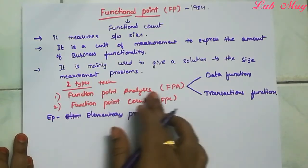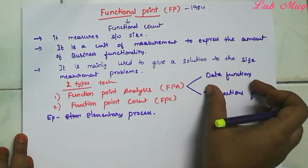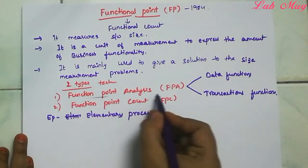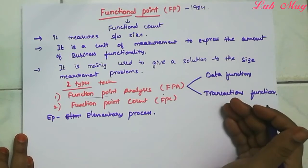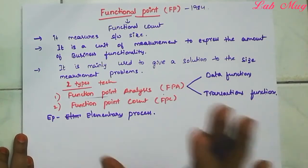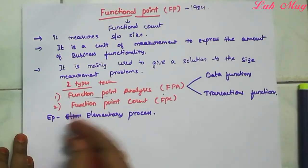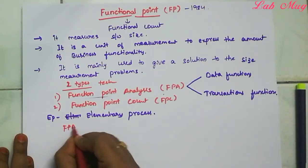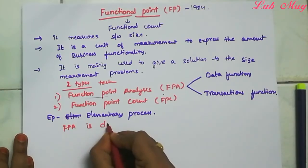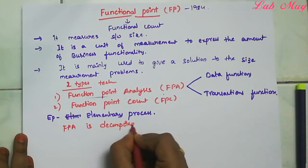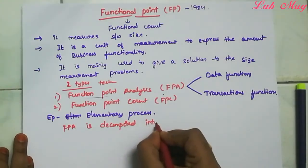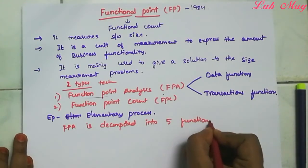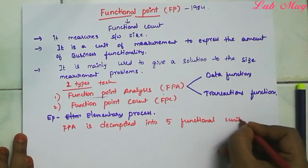Functional Point Analysis is categorized into two functions: Data Functions and Transaction Functions. Both together are further categorized into five types of functional units. FPA is decomposed into five functional units.